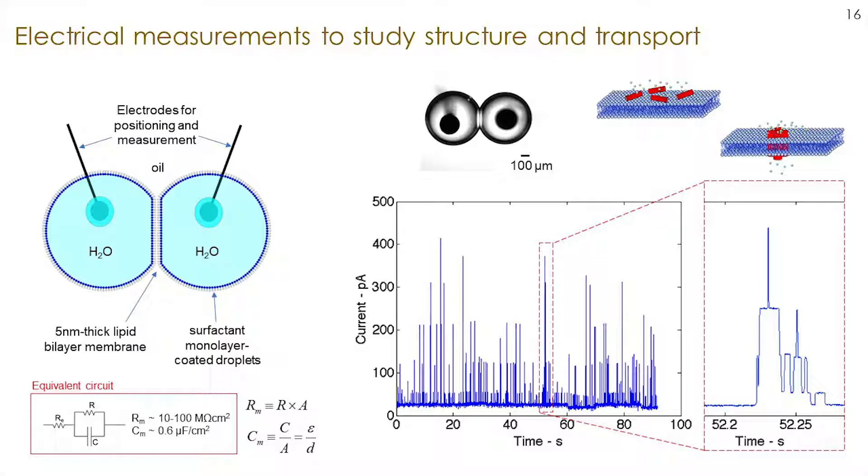This is a measurement showing current, the amount of ions going through the membrane over time when we had alamethicin peptides in the membrane. This peptide feels the applied voltage and opens up. It increases the chance it will open. That's why you see spikes that are intermittent and somewhat random in when they occur. But the levels they open to are not random—they're quite discrete.